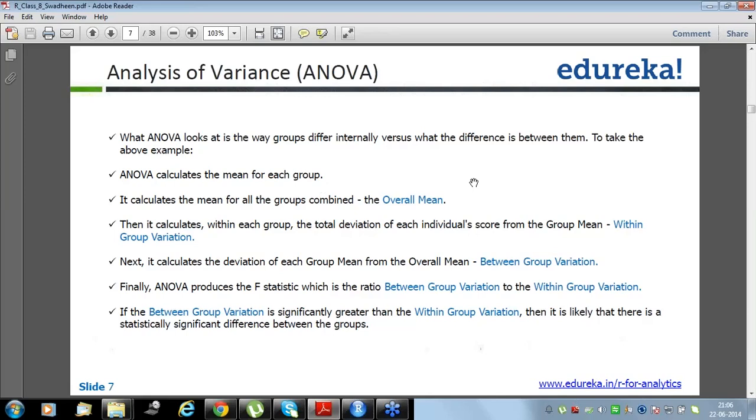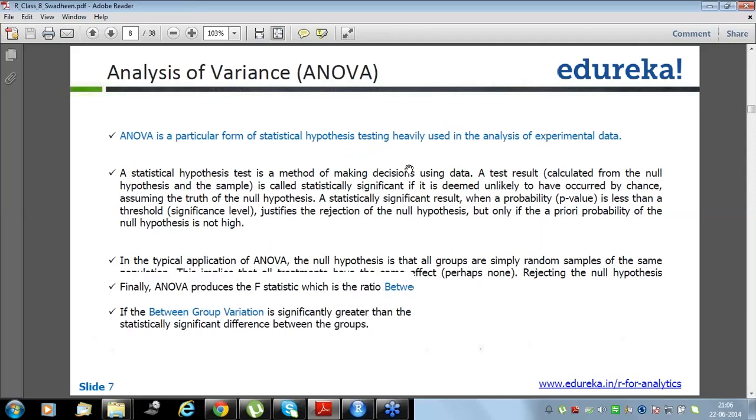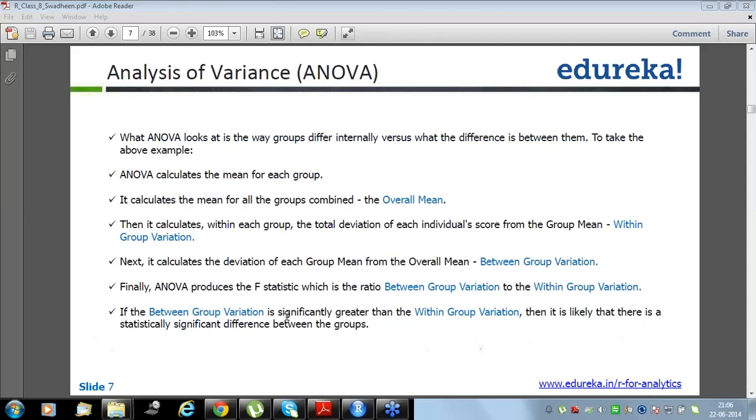What ANOVA looks at is how groups differ internally versus the differences between them. To take the above example, like I told you there are three types of cars: car A, car B and car C. And car A has six rows, car B model has six rows, like we have six cars of model B, six cars of model A and six cars of model C. So first what we do, we calculate the mean of all the groups combined, that is known as overall mean. Then it calculates within each group the total deviation of each individual score from group mean, within group variation. Next, it calculates the deviation of each group mean from overall mean, that is known as between group variation.